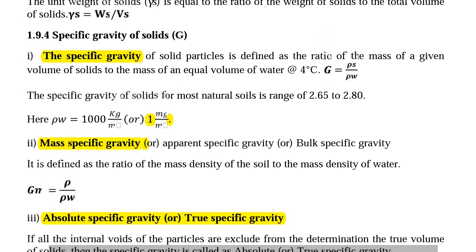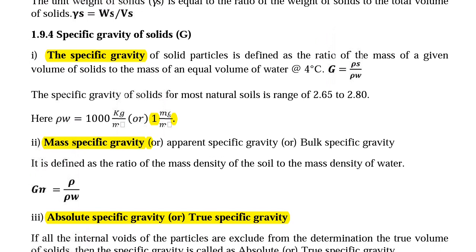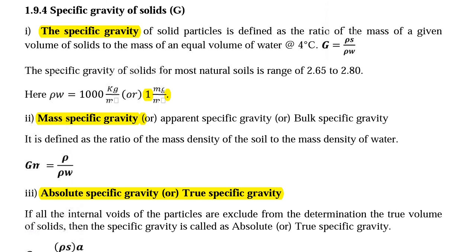Next we will see the definitions of specific gravity of solids G. The specific gravity of solid particles is defined as the ratio of the mass of a given volume of solids to the mass of an equal volume of water at 4 degrees Celsius. The formula is G equal to rho S divided by rho W, or gamma S divided by gamma W. Generally, the specific gravity of solids for most natural soils is in the range of 2.652 to 2.8. The value of rho W is equal to 1000 kg per meter cube or 1 Mg per meter cube.